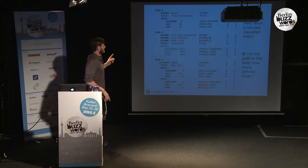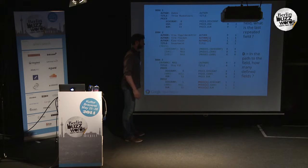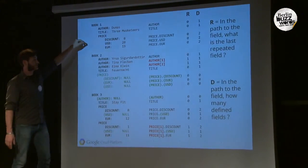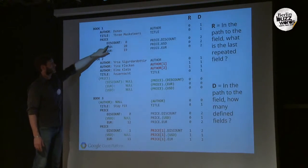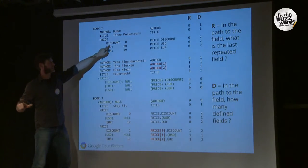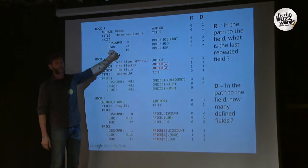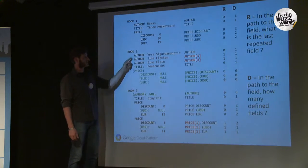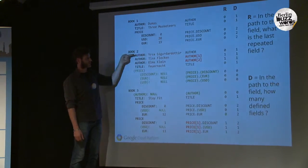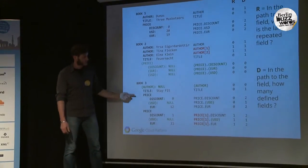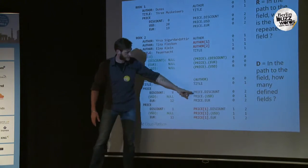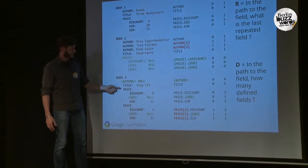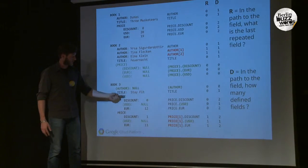The second number is a definition count — basically, how many of those elements are defined. For price.discount, there are two elements: price and discount. If it carries a value, both are defined, so the definition count is two. For an author element, it's just one element and it's defined, so the definition count is one. Interestingly, for price.usd in one case the definition count is one because the price tag is there but USD is not defined — just one defined element, not two.